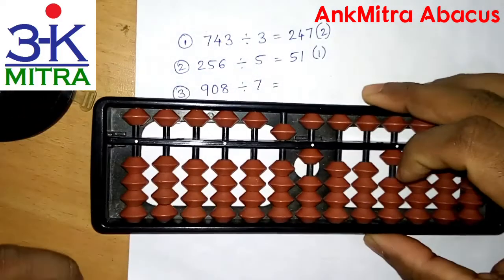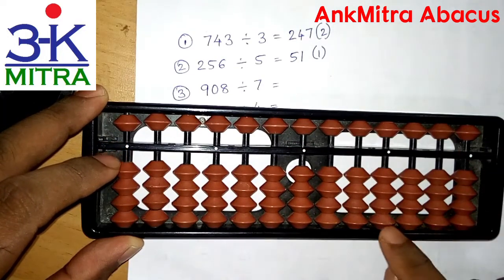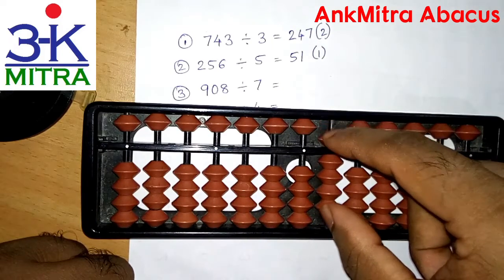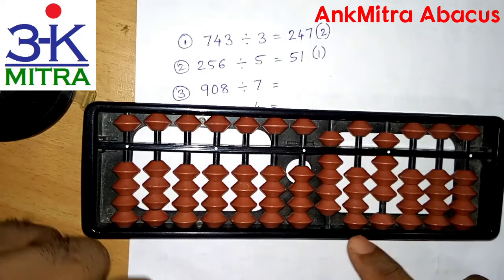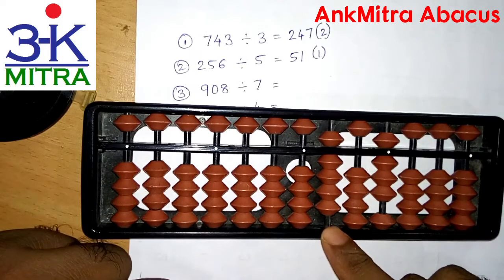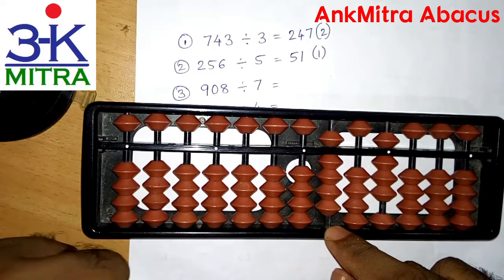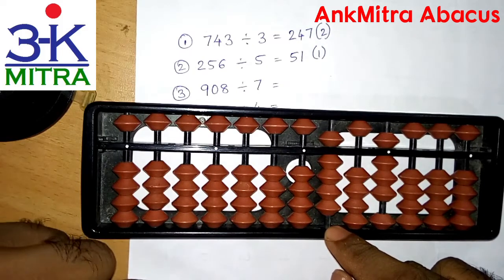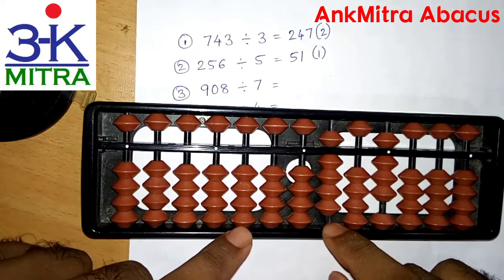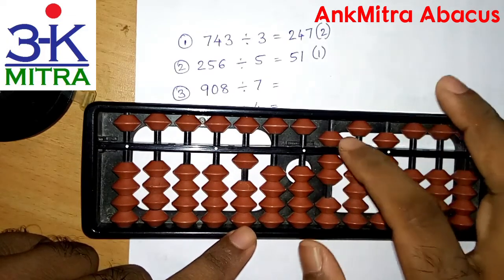Moving to the next question: 908 divided by 7. This being our units place of the question set, the number is placed as 9, 0, 8. For dividing by 7, I start with the leftmost digit on the question set. We have 9, so we can subtract 1 times 7 which is 7 itself. We take 1 on the exactly corresponding rod — this being the third rod, we start the answer on the third rod of the answer set. I take 1 on the third rod of the answer set and subtract 7 from this 9.